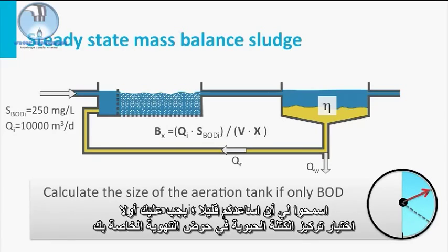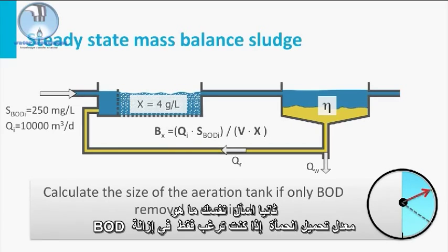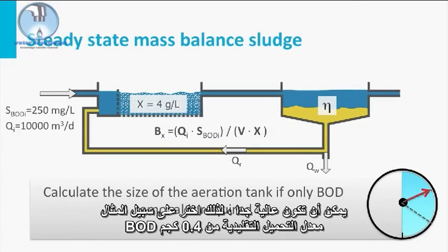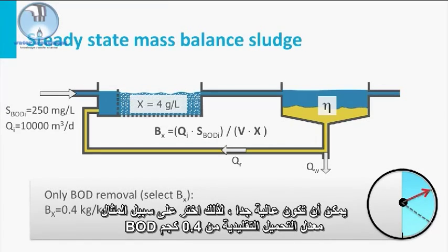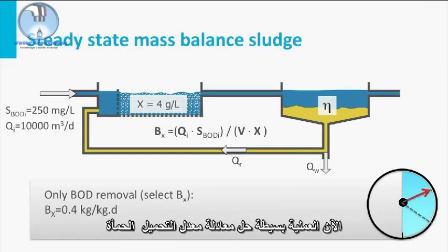First, choose a biomass concentration in your aeration tank — let's say 4 grams per liter, a very general value for activated sludge systems. Next, ask yourself what is the sludge loading rate if you just want BOD removal. It can be quite high, so choose for example the conventional loading rate of 0.4 kg BOD per kg biomass per day. Now it is a simple exercise solving the sludge loading rate equation.